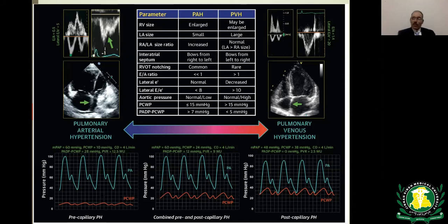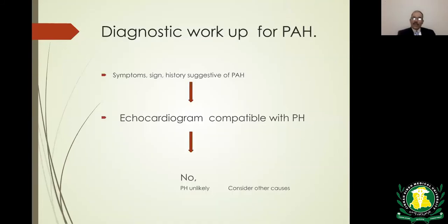On the right side of the image is a four-chamber view of the heart showing enlargement of the right ventricle — which normally should be smaller than the left ventricle — and enlargement of the right atrium pushing the interventricular septum to the left. On the left side is left heart failure causing secondary pulmonary hypertension with an enlarged left ventricle and left atrium. If echo shows elevated pulmonary pressure, the next step is to assess left atrial size; if enlarged, it belongs to WHO class 2.